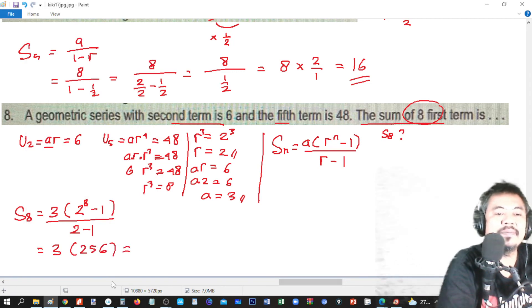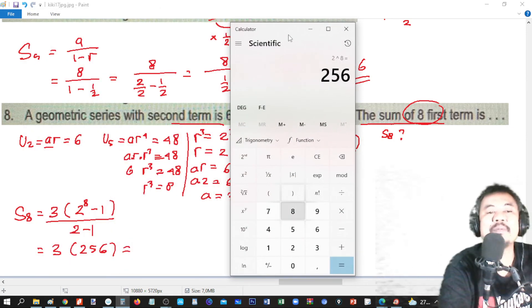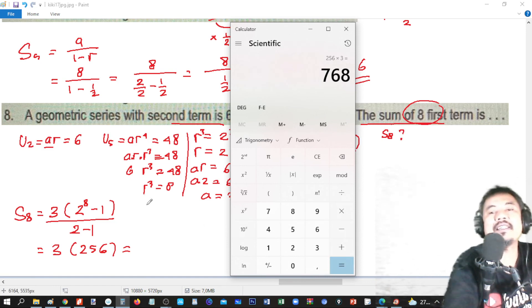So the last thing we do is multiply it with 3. 3 times 256 equals 768.